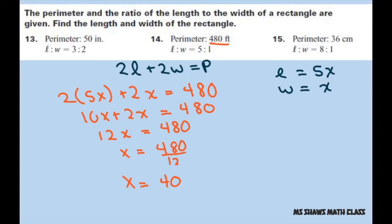To find the length and the width, you do 5 times 40, which gives you 200. And x is just 40. So the length is 200 and the width is 40.